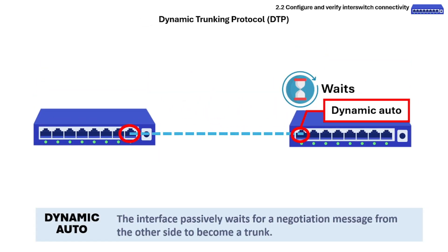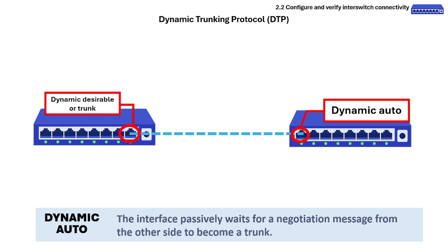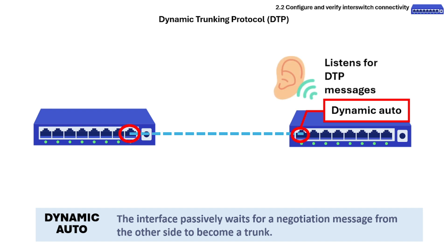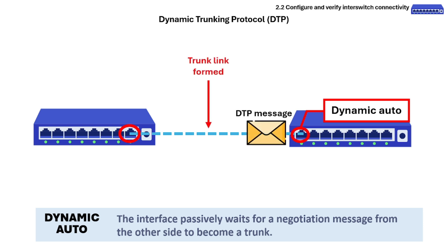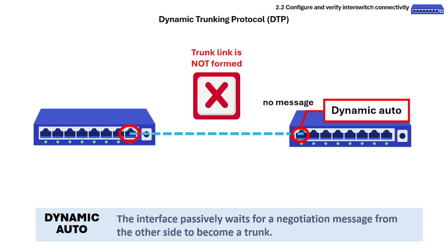In Dynamic Auto mode, the interface passively waits for a negotiation message from the other side to become a trunk. If the other side is set to trunk or dynamic desirable, the interface will become a trunk. The interface passively listens for DTP messages from the other side. If a Dynamic Auto interface receives a DTP message, a trunk link is formed and the interface starts tagging frames. No trunk link is formed if no message arrives, or if the trunking capabilities of the two switches are different.